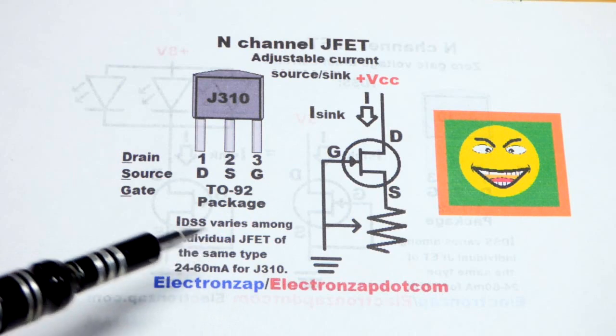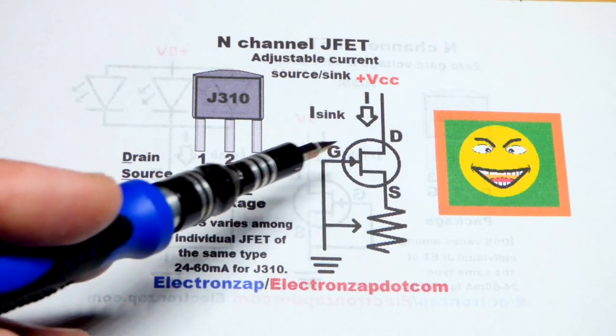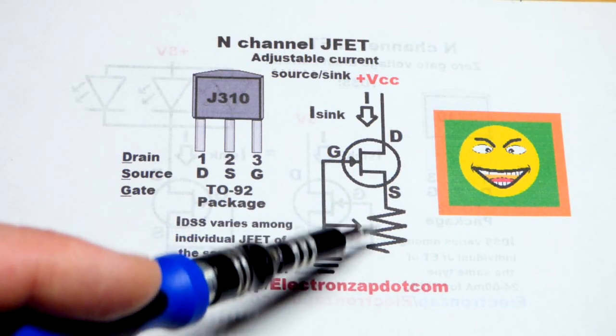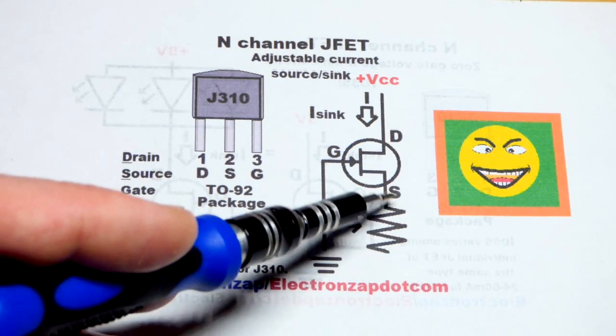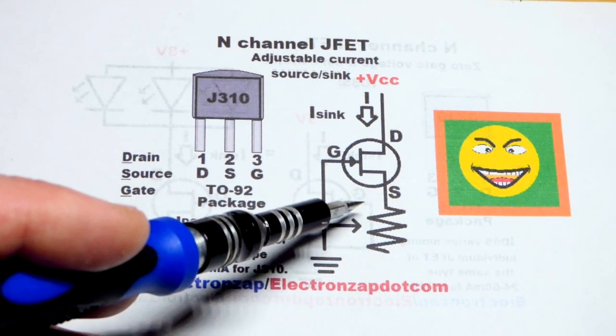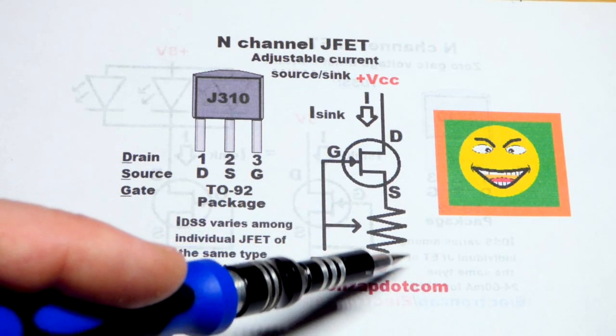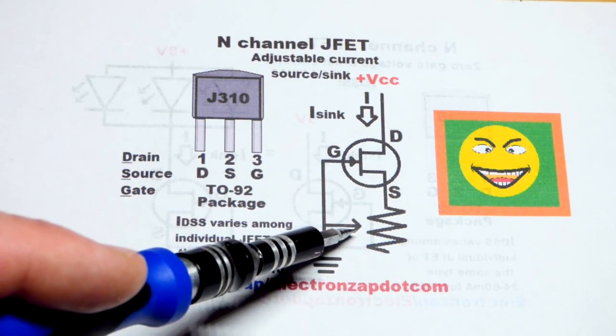Last video we looked at the IDSS - that's when you connect both the gate and the source directly to ground. We're going to use a trim pot as a variable resistor. We're going to connect one end of the resistive element and the wiper that slides across the resistive element, and that's it. We got the other end of the resistor element just floating. We could tie that to the wiper but we're not going to do that.